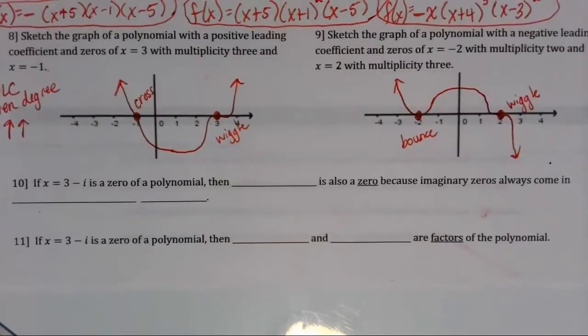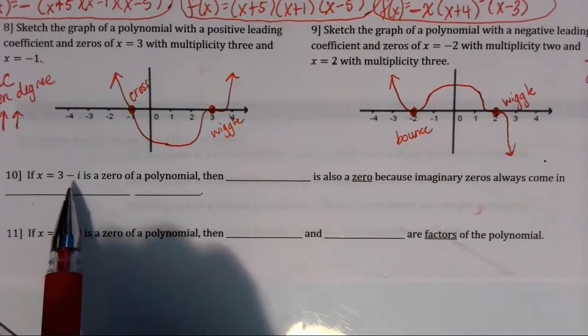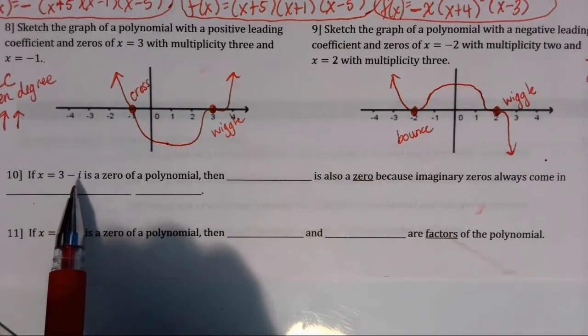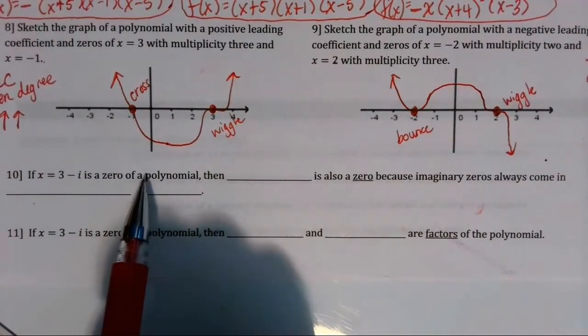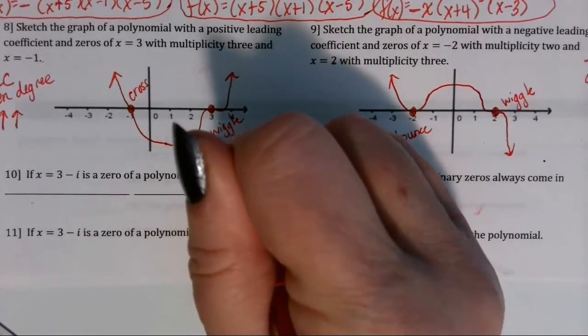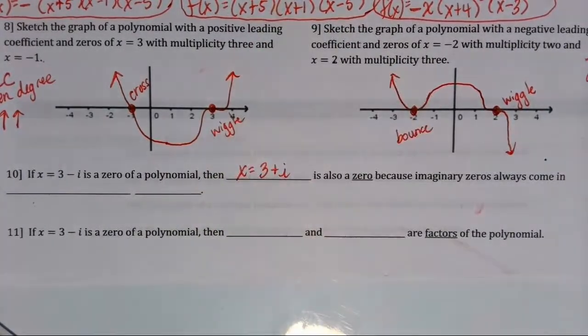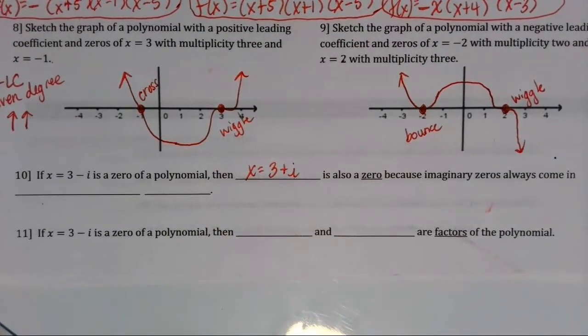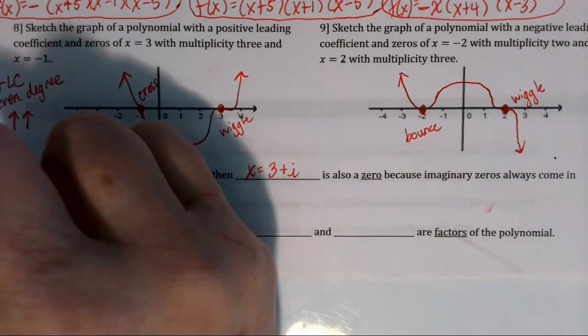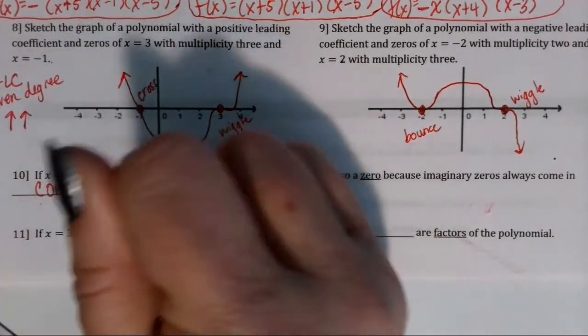Okay, then looking at number 10, if x equals 3 minus i, remember i is the square root of negative 1, the imaginary number, is a zero of a polynomial, then I know that x equals 3 plus i must also be a zero. And that's because imaginary zeros always come in conjugate pairs.